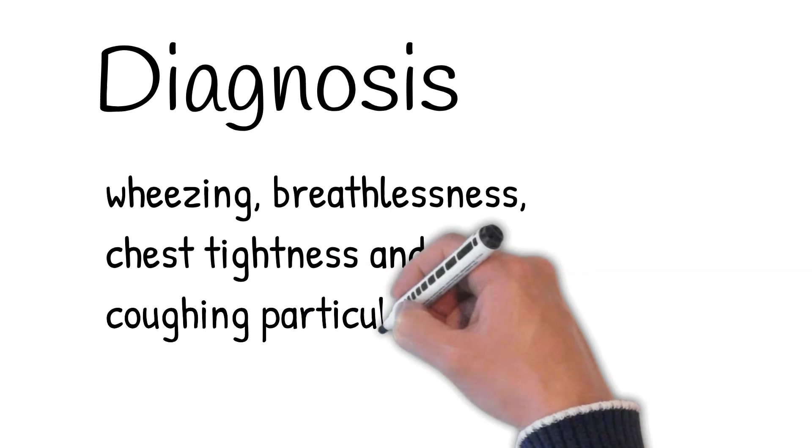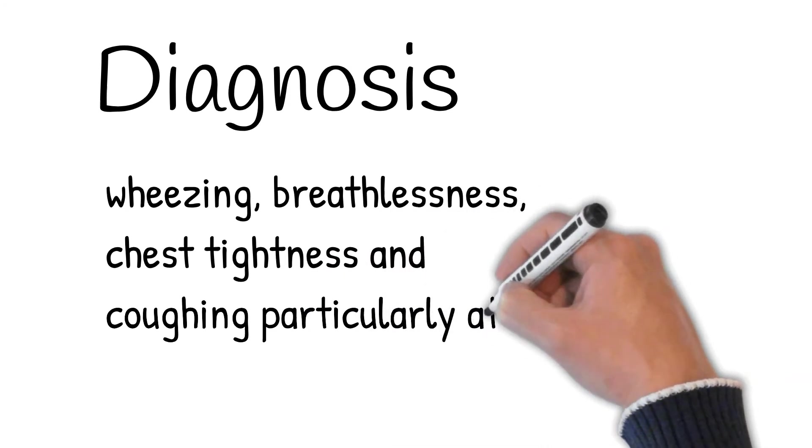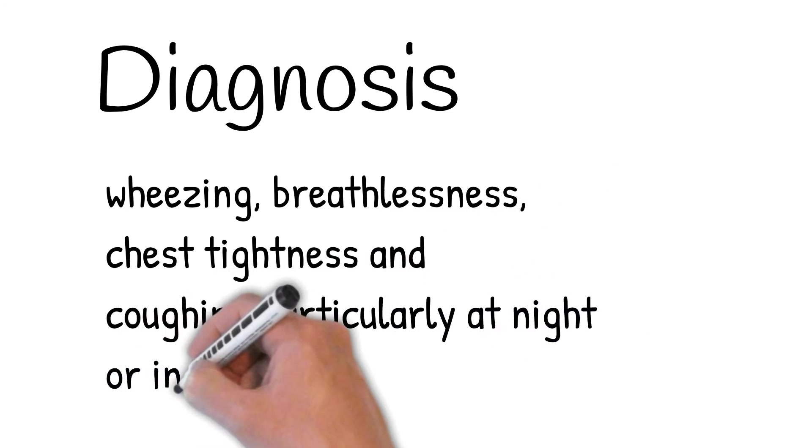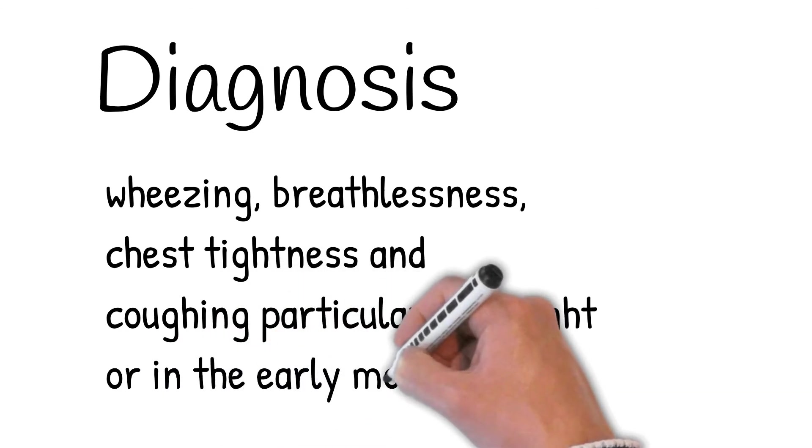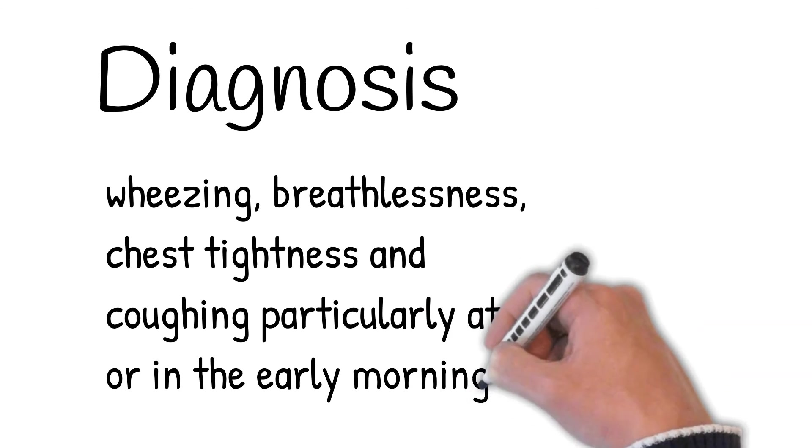Asthma may be suspected if there is a history of recurrent wheezing, coughing or difficulty breathing and these symptoms occur or worsen due to exercise, viral infections, allergens or air pollution. Spirometry is then used to confirm the diagnosis.